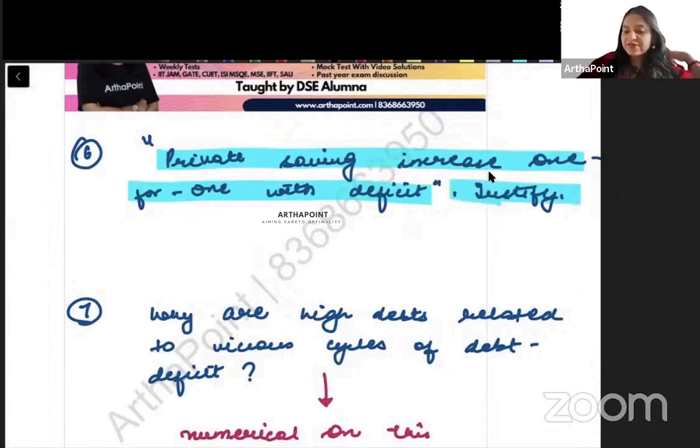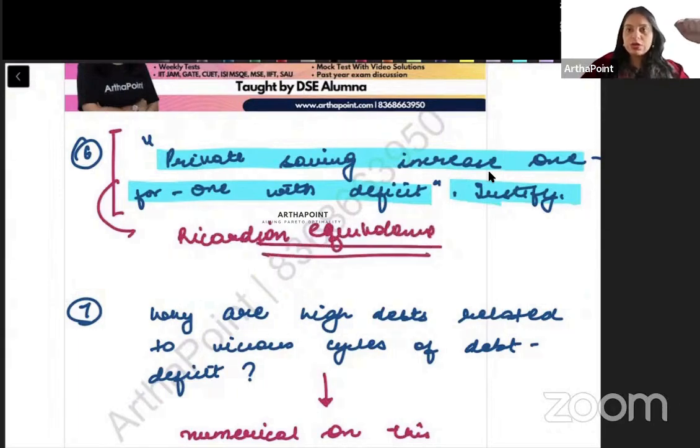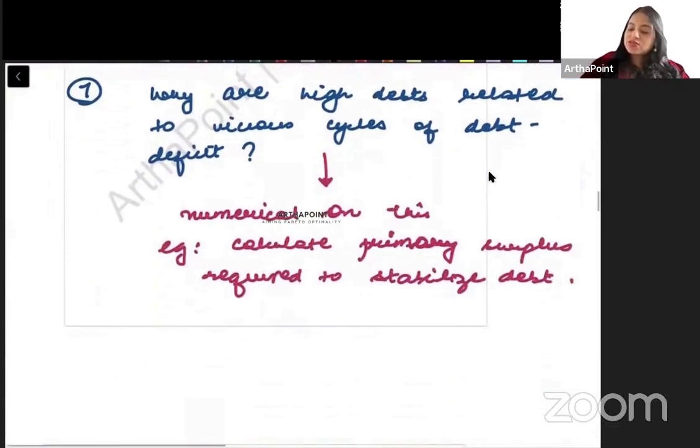Private saving increase one for one with deficit justified. So basically beta I have gone ahead and I have taken this statement from the section of Ricardian equivalents. And it will happen many times that they will go ahead and they will ask you a question based on one of the important liners from the book. Toh jo bhi lines italics me lukhi hoti hai. Whatever lines are mentioned in italics or in inverted commas. Try to remember those lines because they can go ahead and say examine, justify aur ho ek statement dhe denge. So ideally this is a statement I have taken from Ricardian equivalents and you need to go ahead and you need to explain Ricardian equivalents thoroughly in this question.